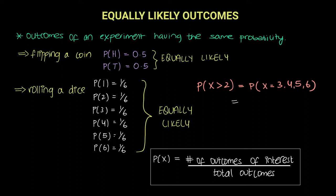Let's look at the formula. The numerator will have the number of outcomes of your interest — you have 4 outcomes of interest: 3, 4, 5, and 6. So, 4 divided by the total number of outcomes, which is 6. If you simplify this, you get 2 upon 3, which becomes your answer.